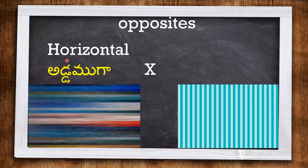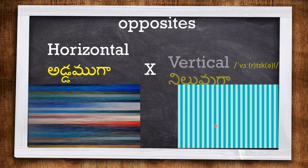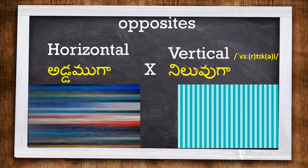HORIZONTAL means lying flat sideways, like this. And the opposite is VERTICAL, meaning upright. These lines are vertical and these lines are horizontal.